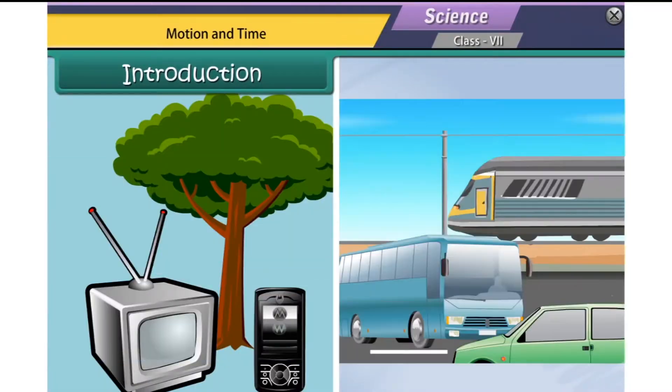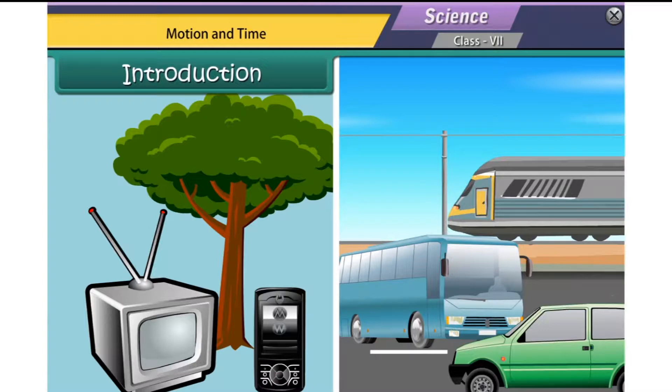Look around yourself and you will find objects of different kinds such as television, mobile, trees, cars, buses, trains, etc.